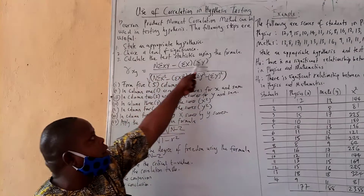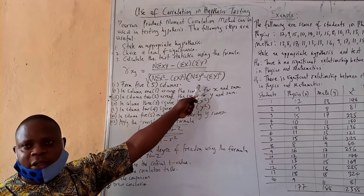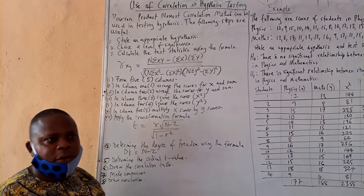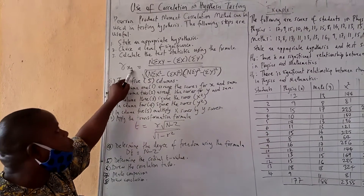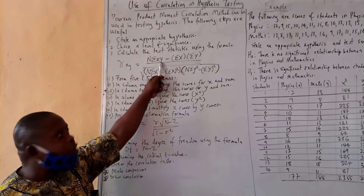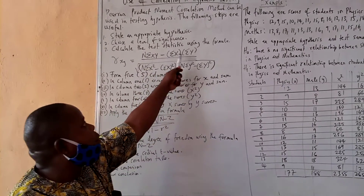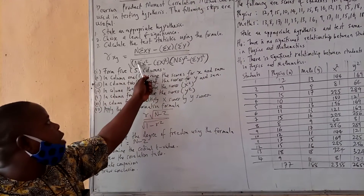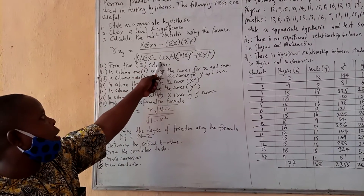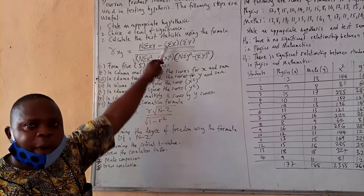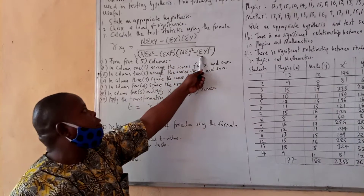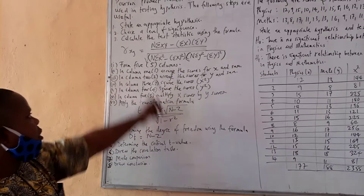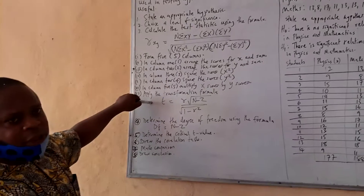The third step is to calculate the test statistics using the formula. This formula is for the Pearson Product Moment Correlation method. There are many variants of it, but we will use this one. It describes the correlation between X and Y, equal to n times summation XY minus summation X multiplied by summation Y, all over the square root of n summation X squared minus summation X squared.